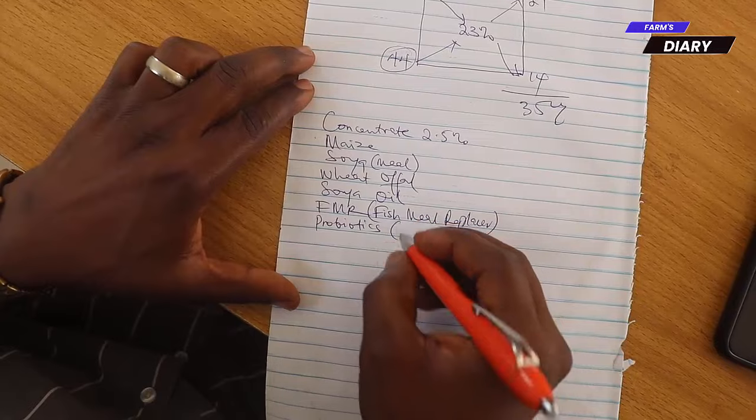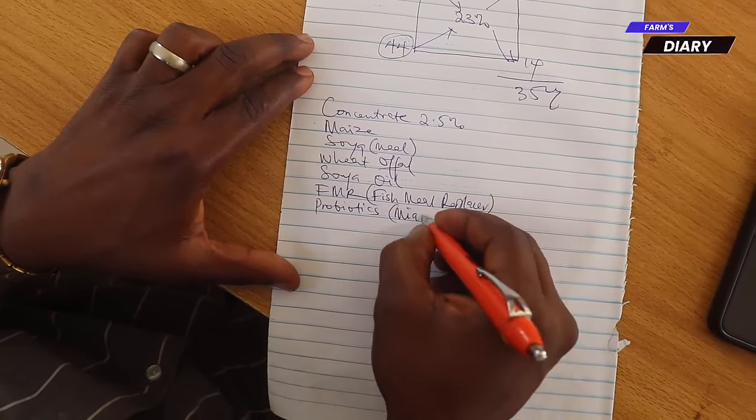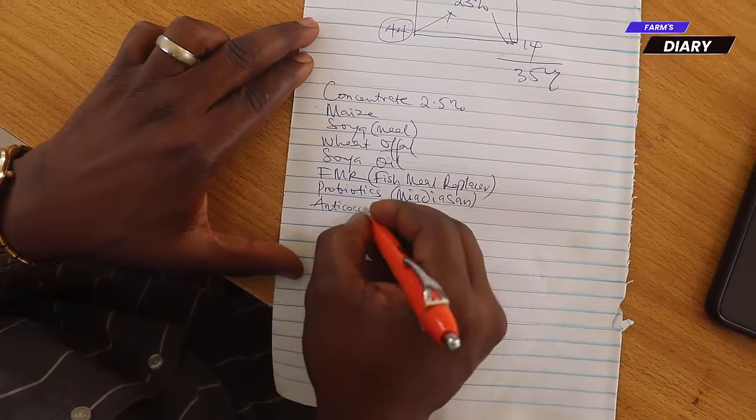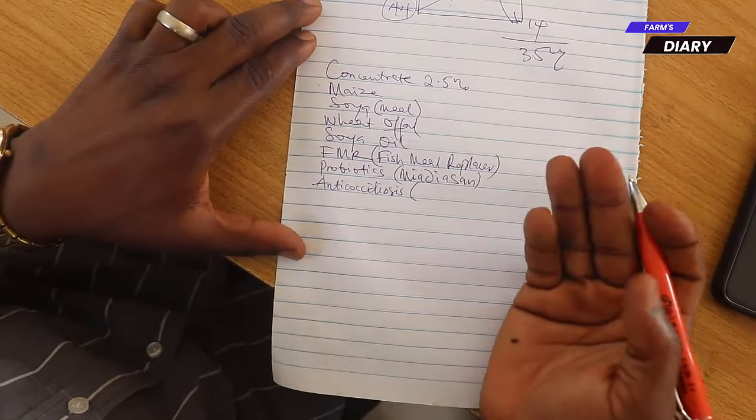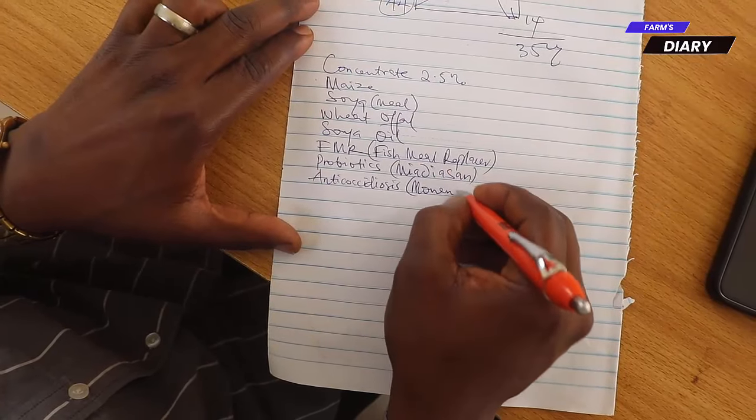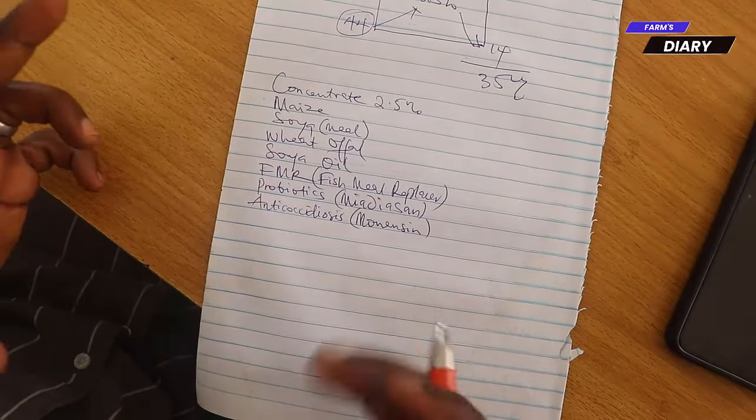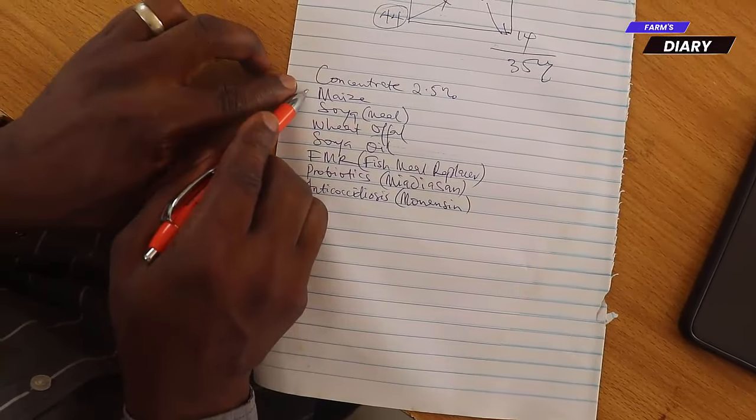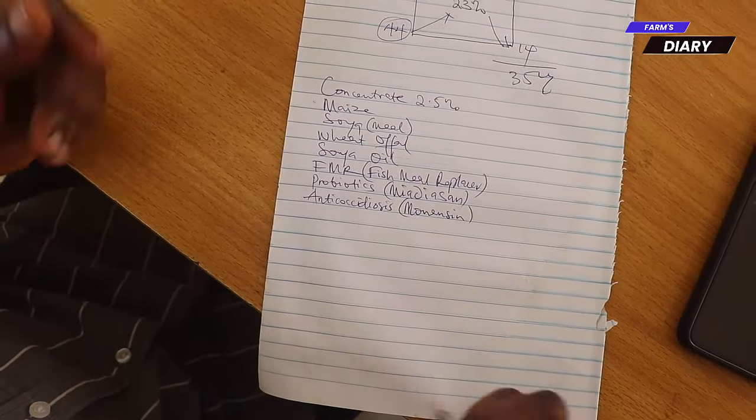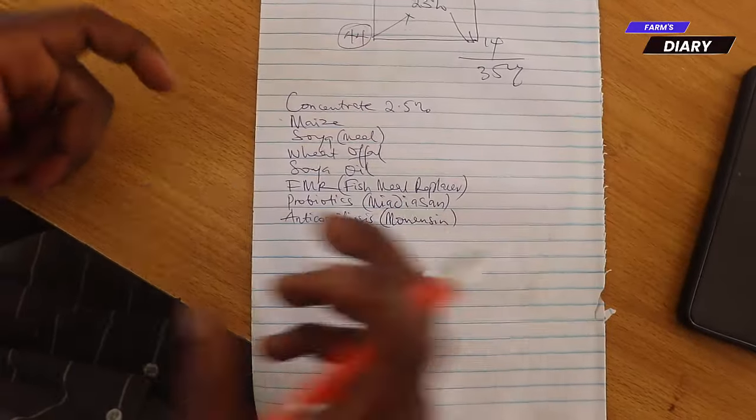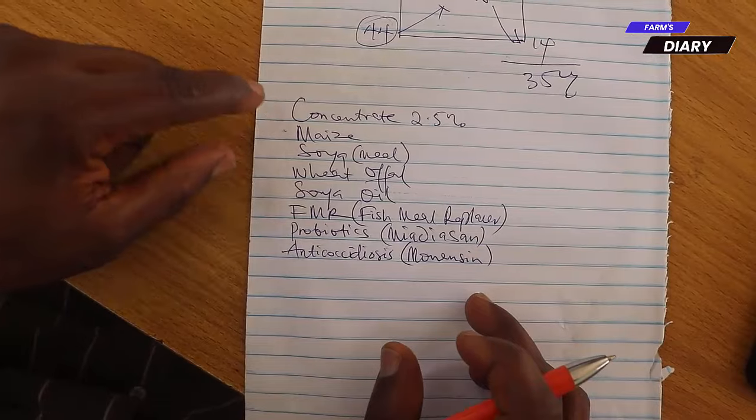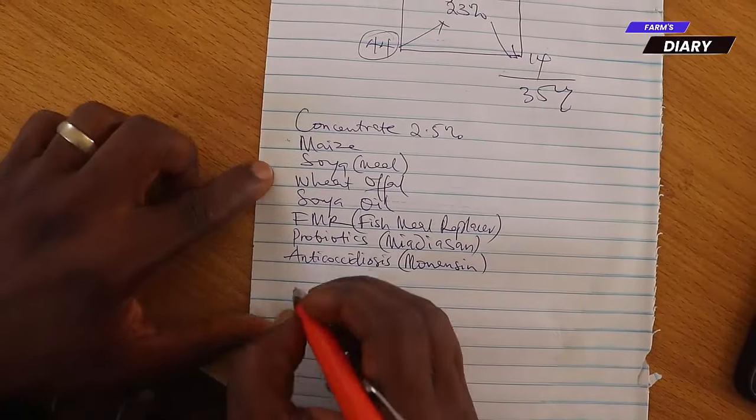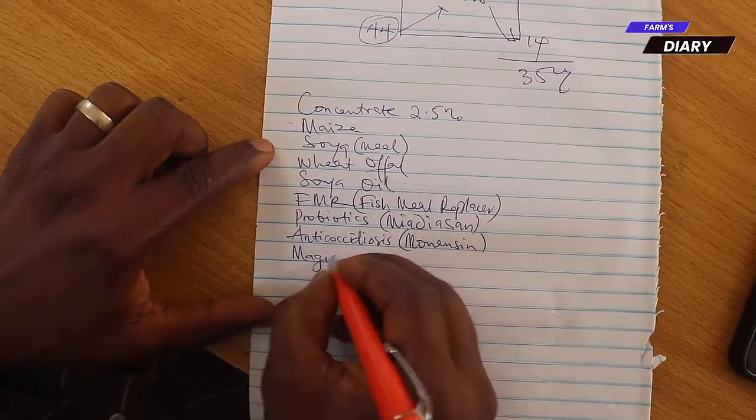These probiotics, personally, I usually subscribe to what we call Meadassan. And again, we will add anticoxidiosis. And 5th grade anticoxidiosis is called monesine. So this is what we are going to be compounding together. And again, to excite you, there is a new innovation now. And that new innovation is because the price of maize and soya is on the high side. The innovation talks about what you can use to replace part of the energy and part of this amino acid and reduce the maize and soya.